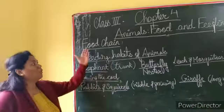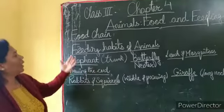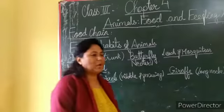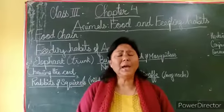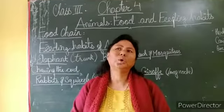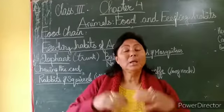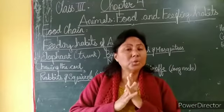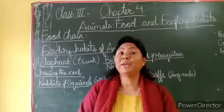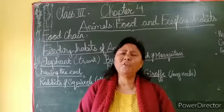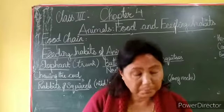Now let me explain to you about food chain. What do you understand by food chain? Plants are producers - if there are no plants, there is nothing, no life on the earth. Everyone, directly or indirectly, is dependent on plants.